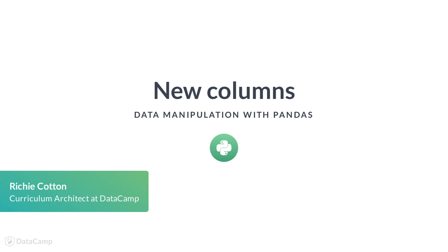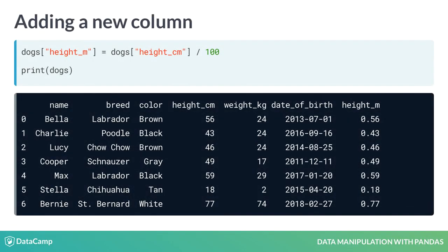You may have to add new columns derived from existing columns. Creating and adding new columns can go by many names, including mutating a data frame, transforming a data frame, and feature engineering.